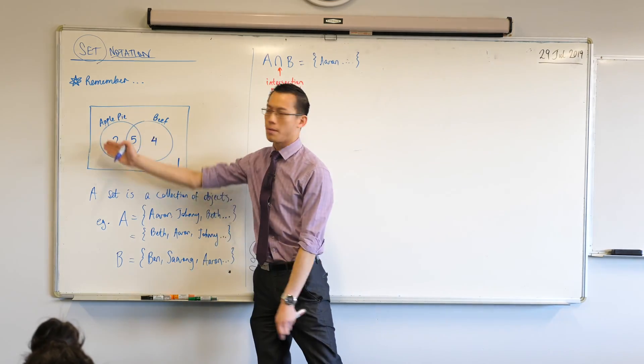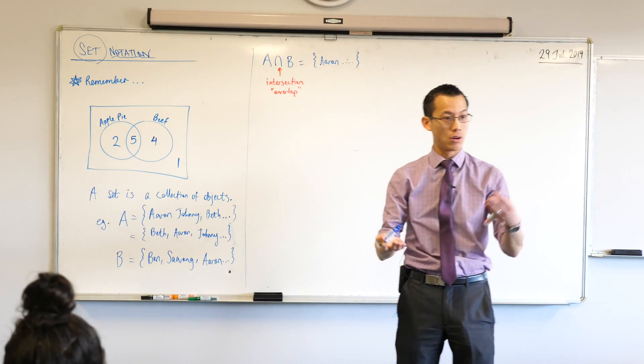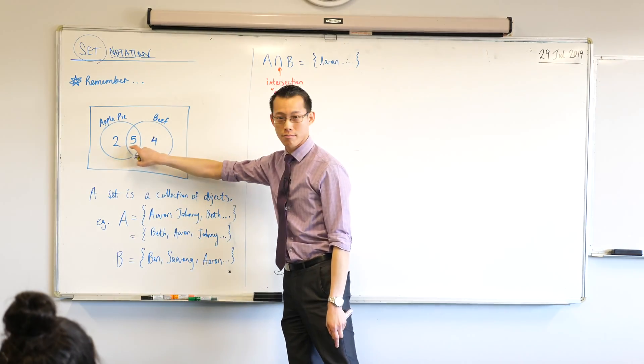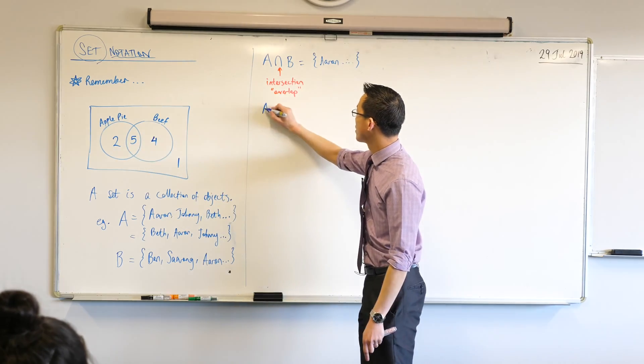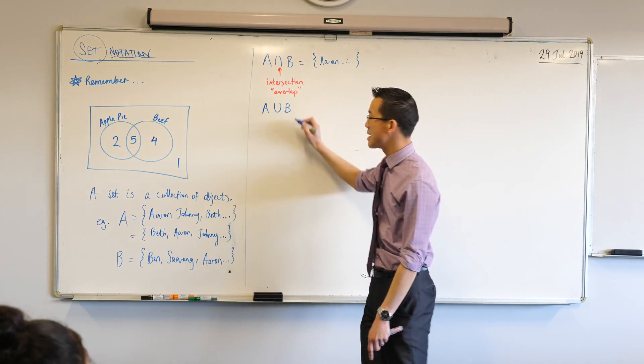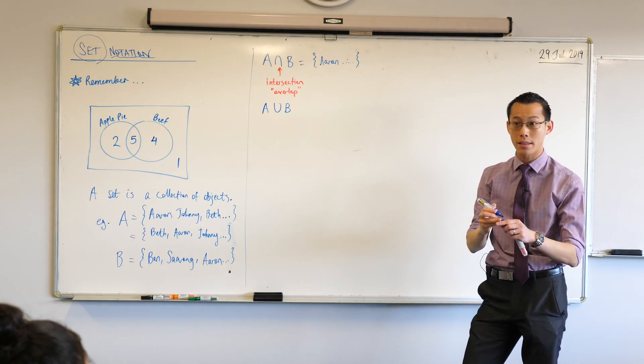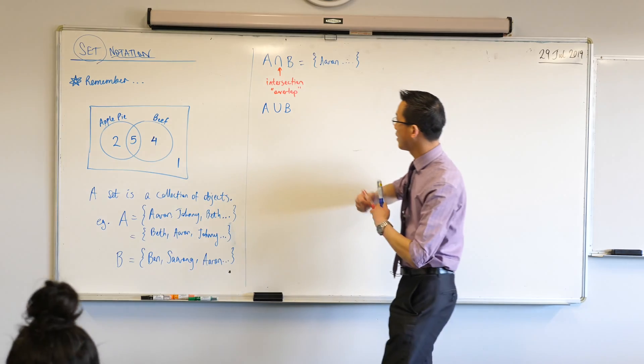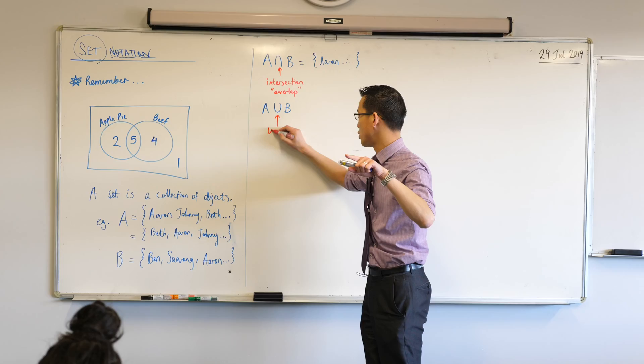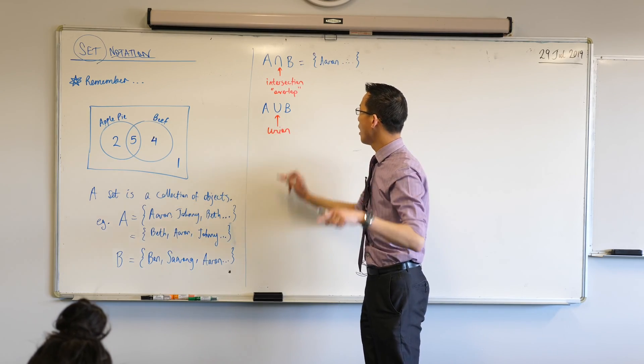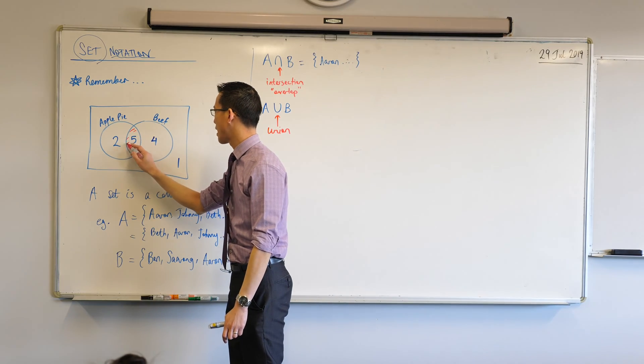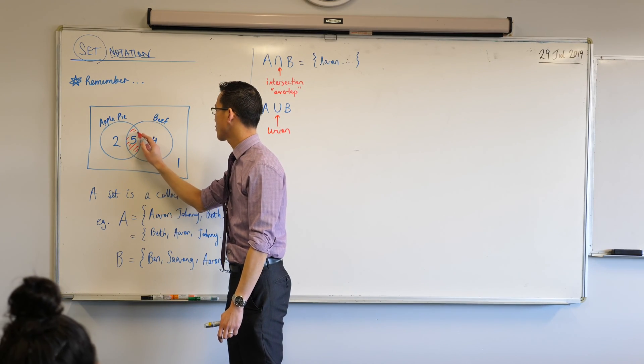Alright, now, in addition to having the intersection, I could say, what about all the people who ate either apple pie or beef? Inclusive of both of them, even if you don't have to eat both at the same time. We use this same symbol, but we turn it back around the right way. So, we have A union B without, sorry, a U without the tail on it. And this symbol here, this actually does stand for a more helpful letter. The U kind of stands for this word union.